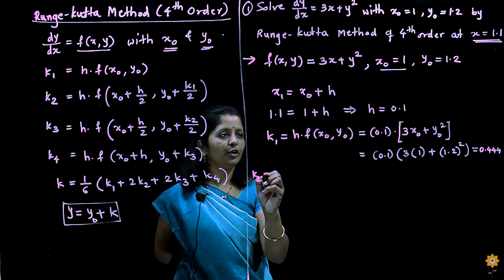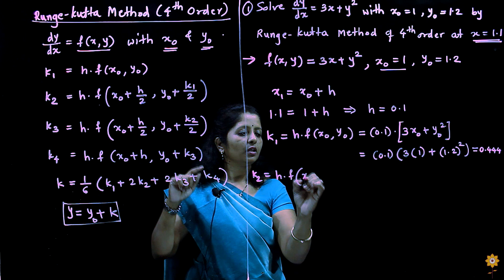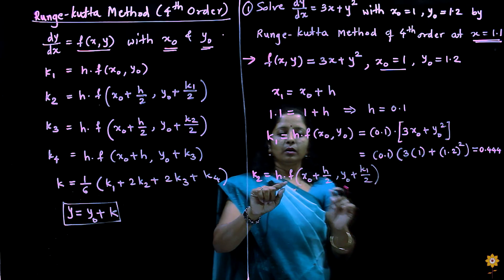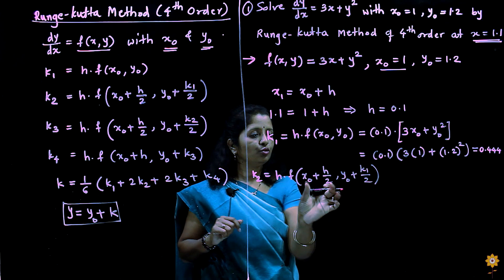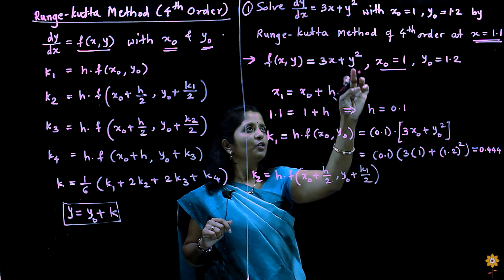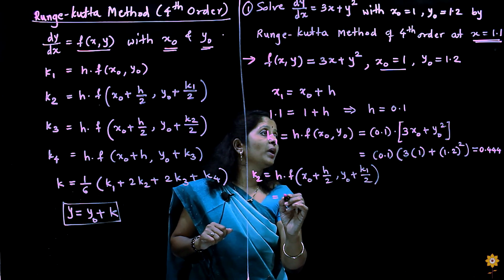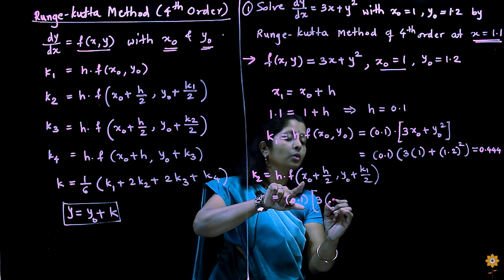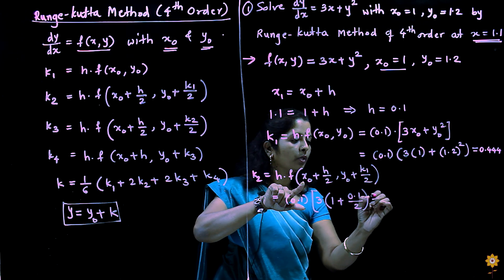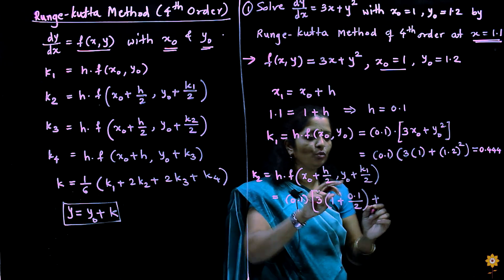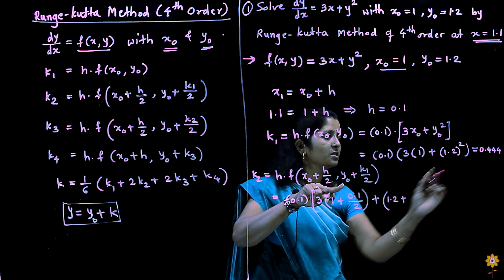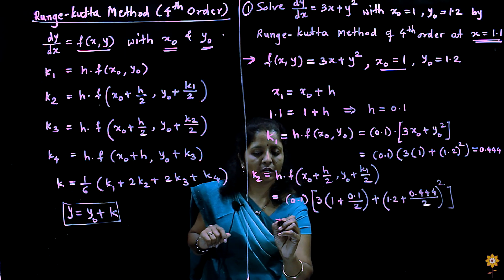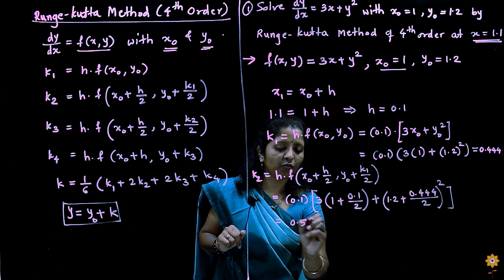Using k1 to calculate k2: k2 is h into f of x0 plus h by 2, y0 plus k1 by 2. Substituting f of xy equal to 3x plus y squared, x is x0 plus h by 2 and y is y0 plus k1 by 2. So it is 0.1 into 3 into (1 plus 0.1 by 2) plus (1.2 plus 0.444 by 2) whole squared. Calculating this expression gives k2 equal to 0.5172.